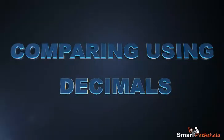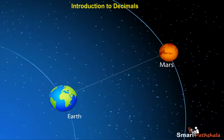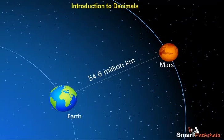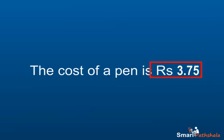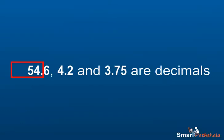This module will give an introduction to decimals. The closest distance between Earth and Mars is estimated to be 54.6 million km. The distance between Earth and Proxima Centauri is 4.2 light-years. The cost of a pen is rupees 3.75. Consider the numbers 54.6, 4.2, and 3.75. All these numbers have a point or decimal. These numbers are called decimals.